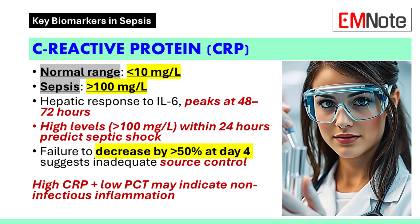Clinically, C-reactive protein is useful for early risk stratification. Levels greater than 100 milligrams per liter within 24 hours predict progression to septic shock. Failure to reduce C-reactive protein levels by more than 50% by day 4 suggests inadequate source control. High procalcitonin levels with low C-reactive protein levels may indicate immunosuppression or liver dysfunction.